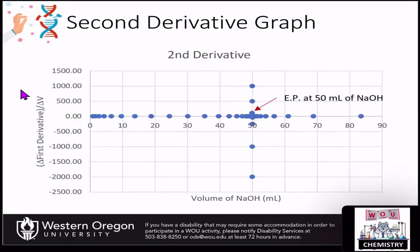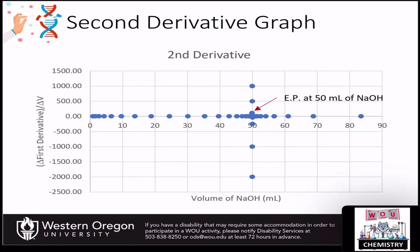If the first derivative graph does not allow you to identify the equivalency point, you can do a second derivative graph. This is going to be the change in the first derivative over the change in the volume, which we're going to plot on the y-axis. We're still plotting the volume of the base on the x-axis. Let's take a look at what that looks like in your spreadsheet view.